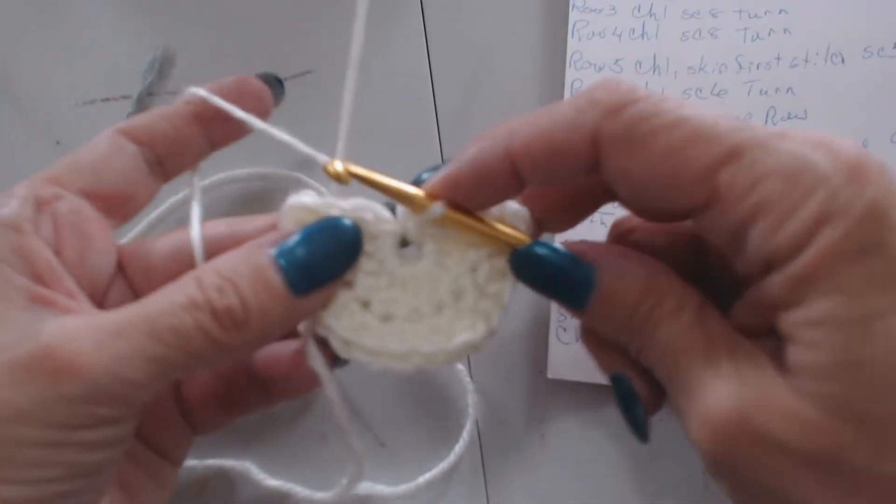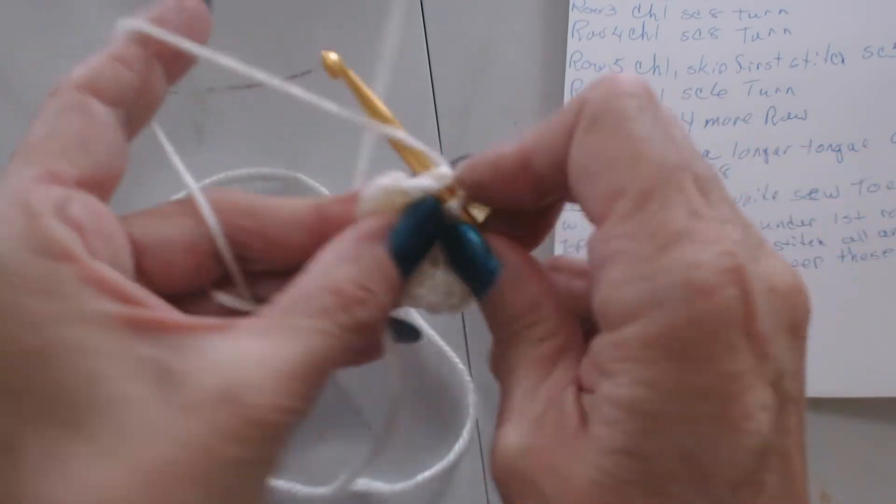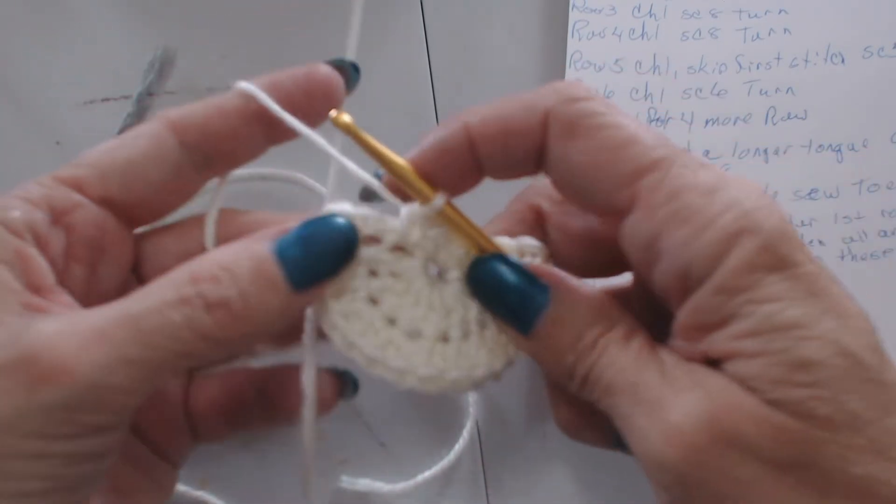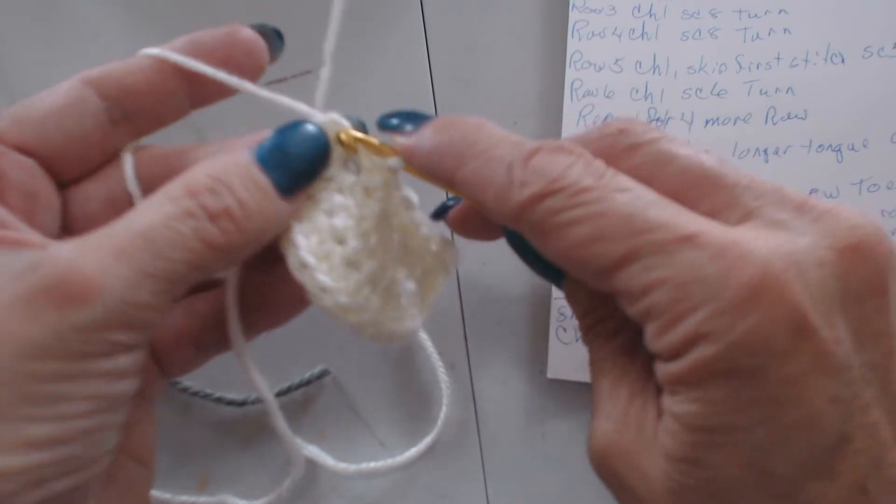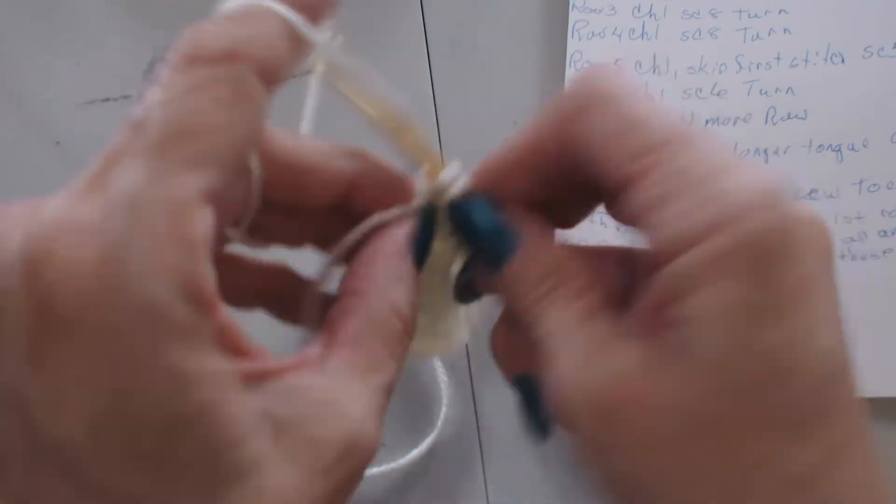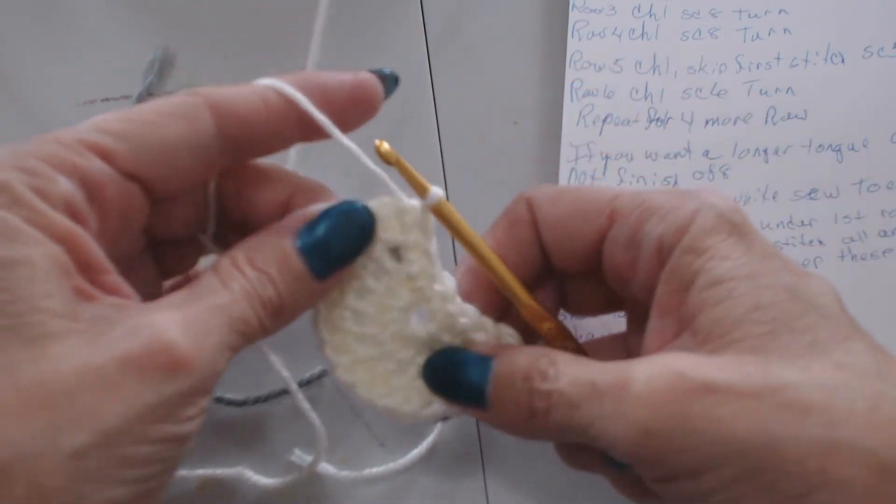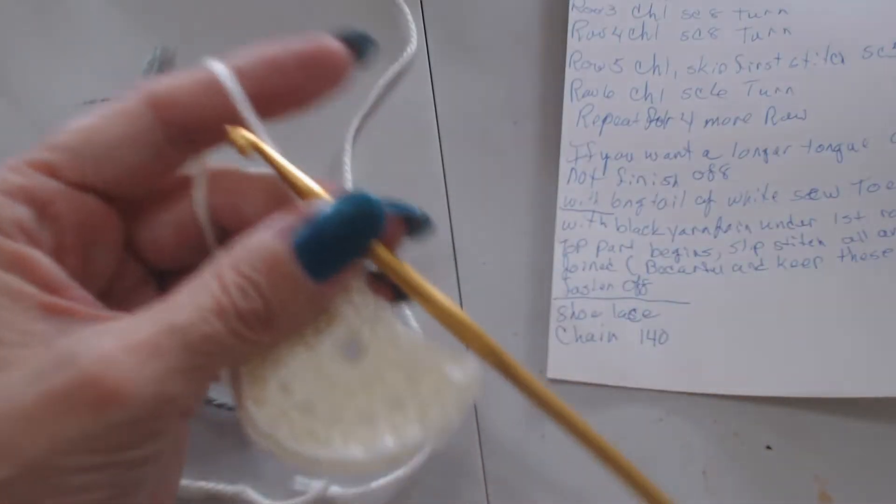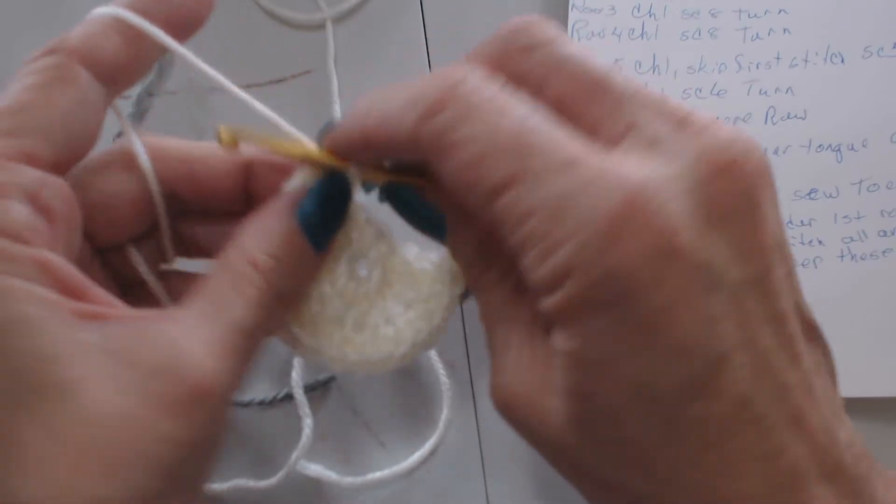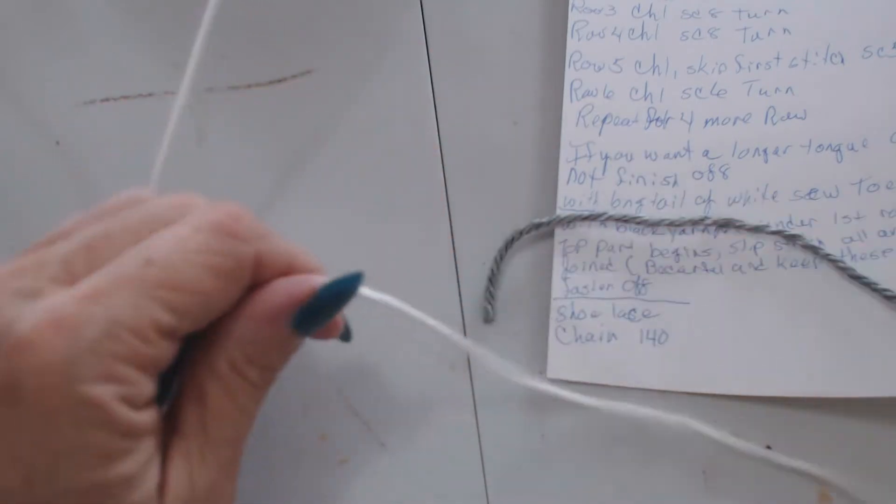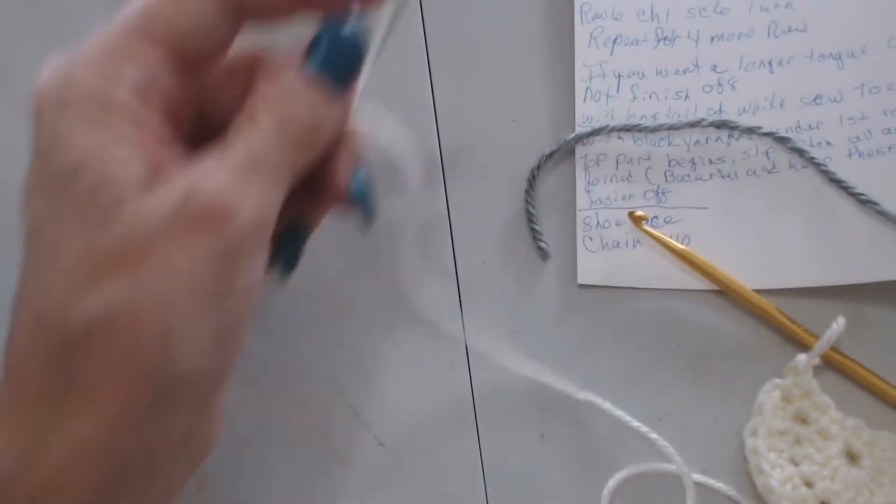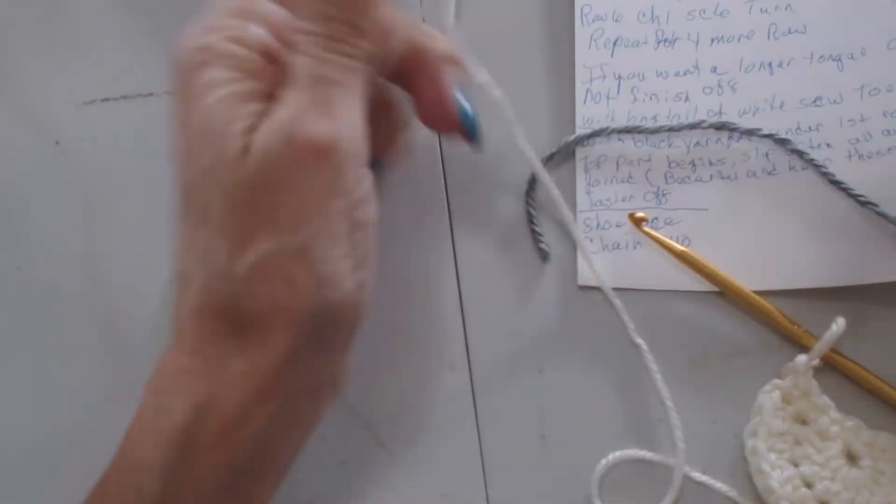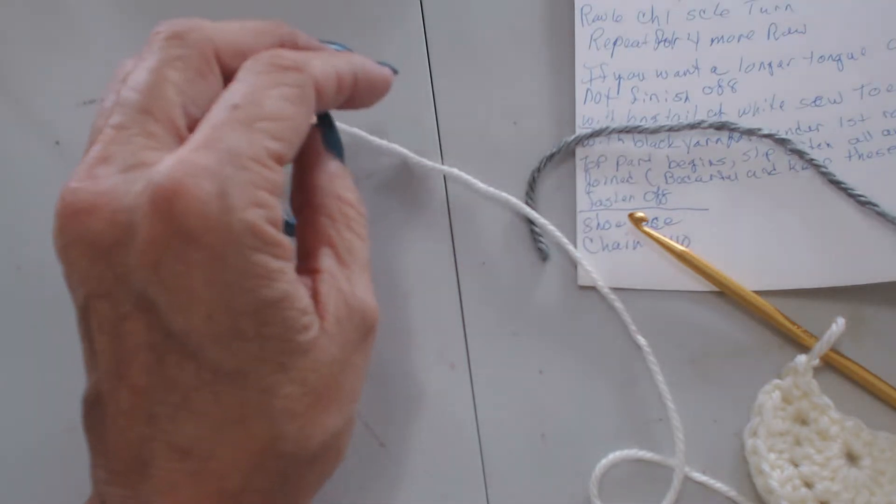Now along this edge here I'm going to tie in that tail. So you've got eight. Now what I'm going to do is I'm going to slip through and I'm going to leave me a two to three foot tail because we're going to be using this tail to sew this toe onto the shoe.